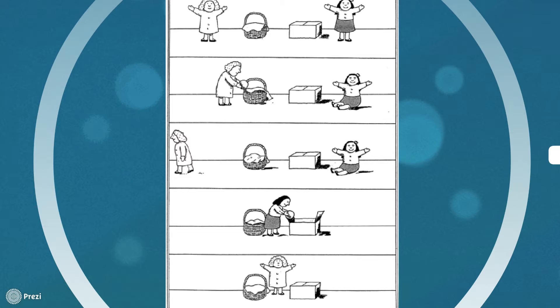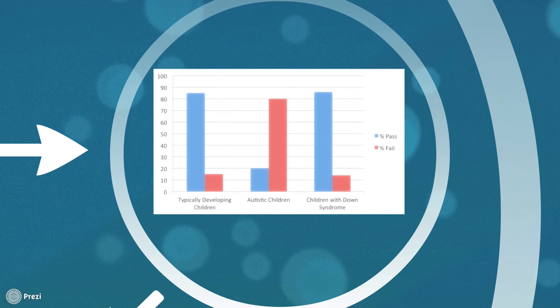The subjects are then asked where Sally will look for the marble. To answer correctly on this task, children have to recognize that because Sally was outside the room when Ann moved the marble, she would still think it's in the basket. In this original study by Baron Cohen, 85% of typically developing children answer correctly while 80% of autistic children fail.